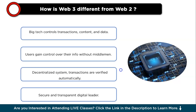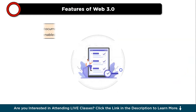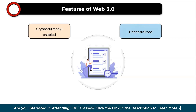Web 3.0, the next evolution of the internet, boasts several distinctive features. First is cryptocurrency integration — cryptocurrencies such as Bitcoin and Ethereum serve as native digital currencies for transactions within the Web 3 ecosystem. These decentralized digital currencies enable peer-to-peer transactions without intermediaries, fostering a more inclusive and efficient financial system.